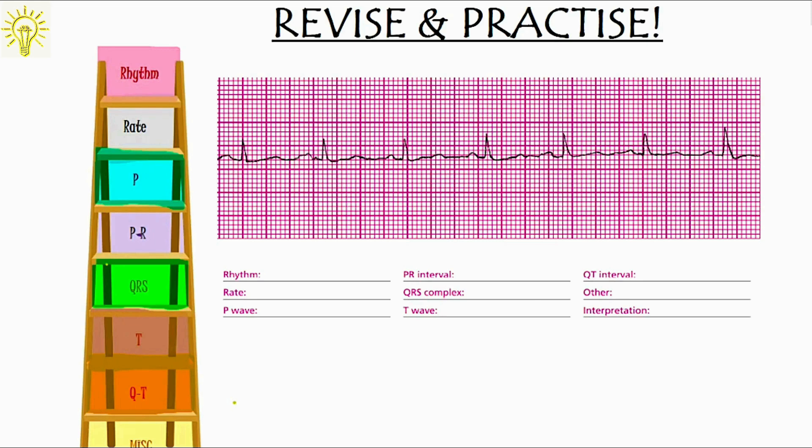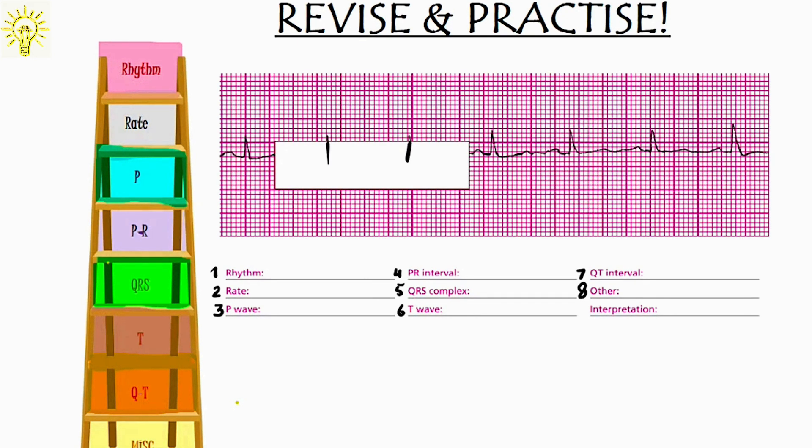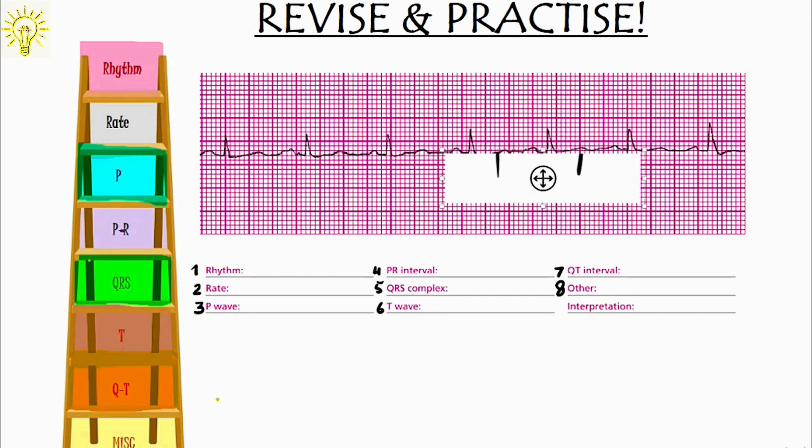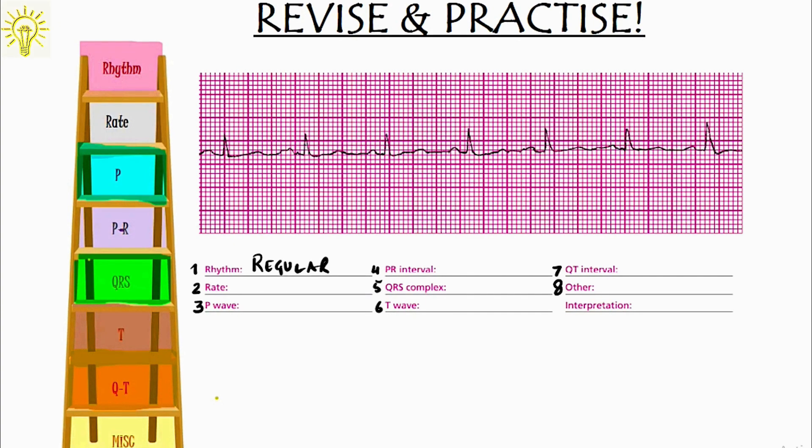Let's revise the 8 steps on this ECG strip for revision. Now remember, the more practice you do on ECG, the more you will remember. We have step 1, 2, 3 as rhythm, rate, the P wave, the PR interval, the QRS complex, the T wave, the QT interval and any other anomaly that we see and in the end we will interpret. Step 1: rhythm with the paper, we make the markings and tally with other R waves. So, all the R waves seem fine and regular. For the rate, we have 3.5 large boxes between successive R waves. So, that's around 300, 150, 100. It's approximately around 90 beats per minute.